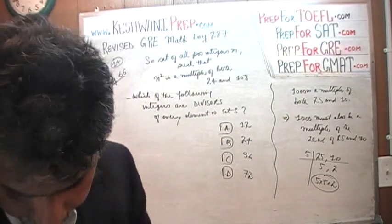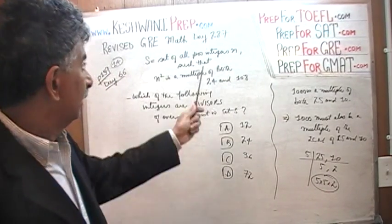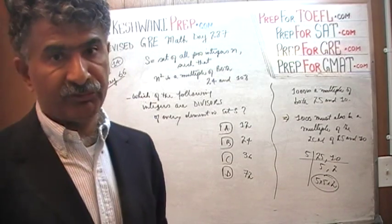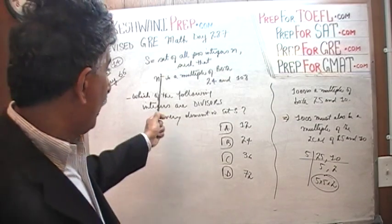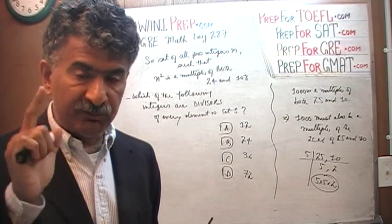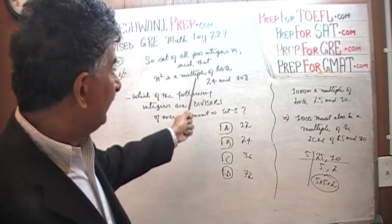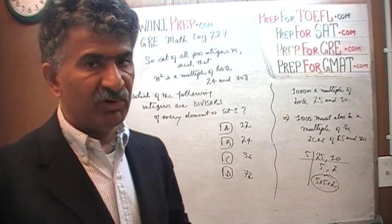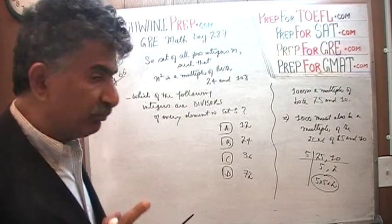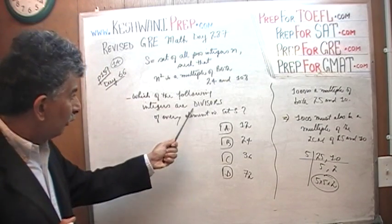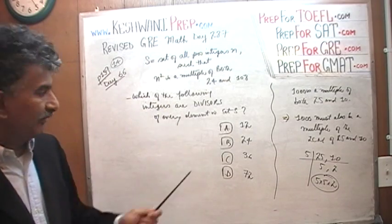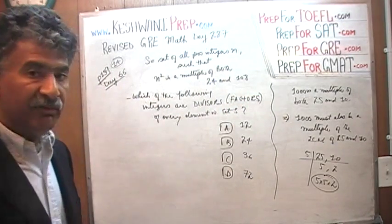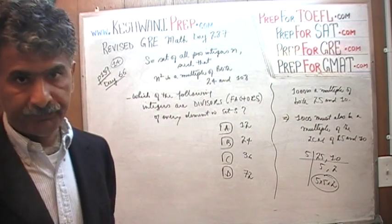Here's the problem. We are told that we have a set S which consists of positive integers. These integers possess a certain characteristic: if you take the square of any element in the set, that square is a multiple of both 24 and 108. The question is, which of the following would be divisors — that is, factors — of every single element that appears in set S?